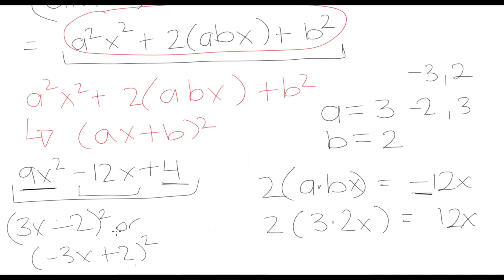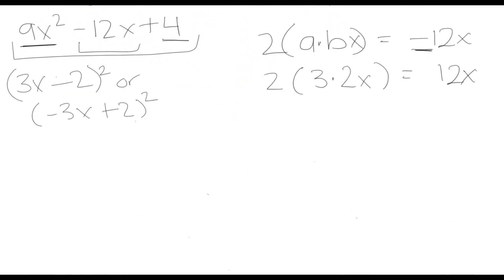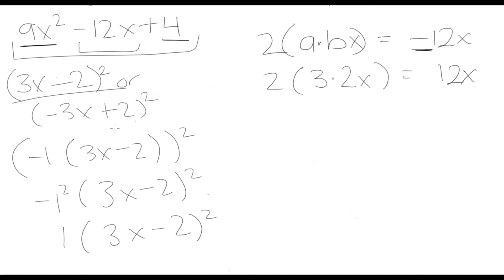So this expression can be written as 3x minus 2 squared or negative 3x plus 2 squared, since one has to be positive and one has to be negative. These two are actually the same thing: factoring out negative 1 from the second gives negative 1 times 3x minus 2, all squared, which equals negative 1 squared times 3x minus 2 squared. Since negative 1 squared equals 1, both forms are equivalent.